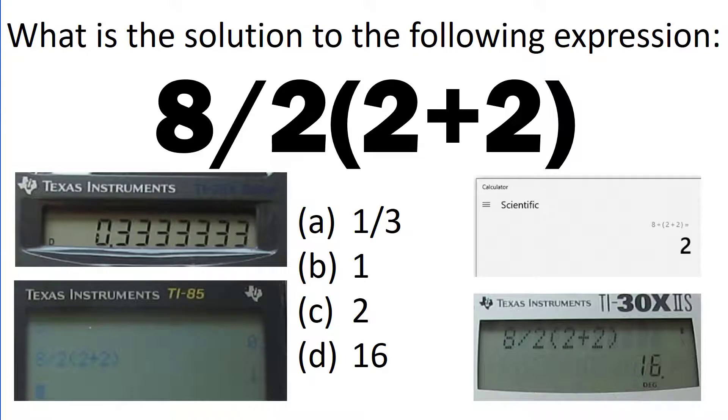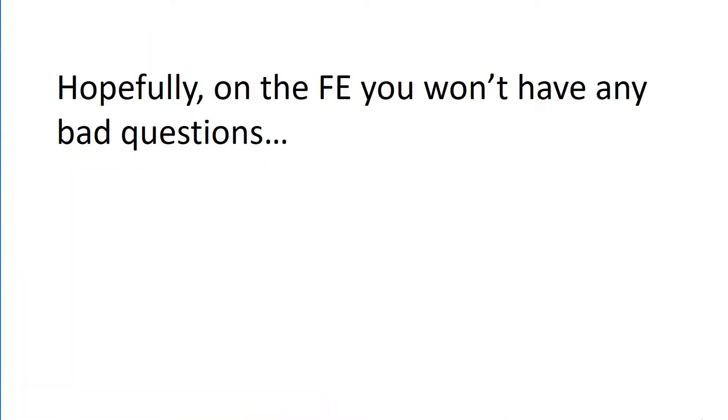all sort of right in one sense, but they're all sort of wrong. This expression is vague - we don't know whether the whole quantity of 2 times (2+2) is divided into the 8, or do we follow strict order of operations: 8 divided by 2 which is 4, then times (2+2) which is 4. The expression is a poor expression. Hopefully